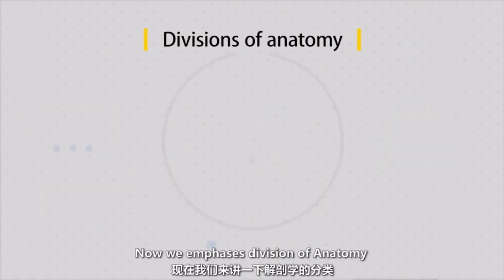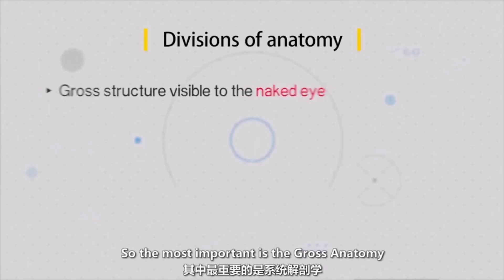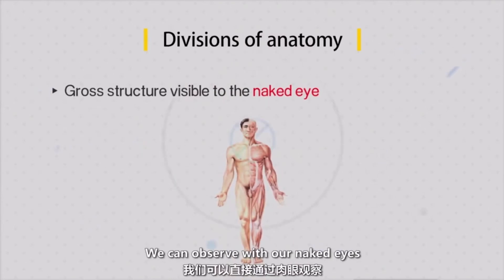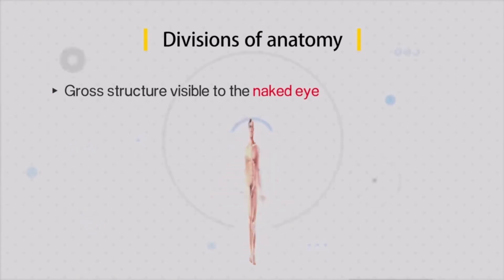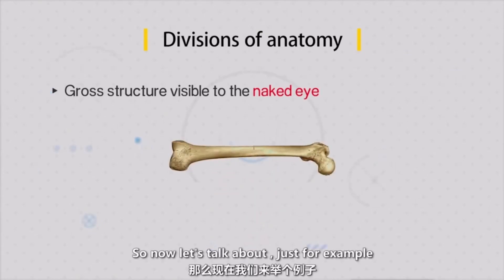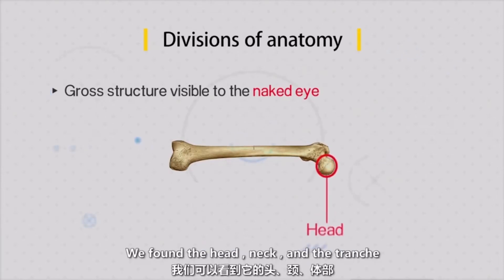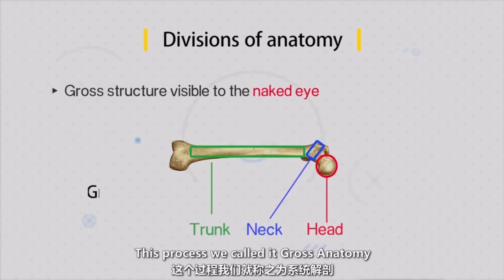Now we emphasize the divisions of anatomy. Anatomy is divided into many courses. The most important is gross anatomy. 'Gross' means big — we can observe it with our naked eye. For example, we observe this femoral bone and find the head, the neck, and the trunk. We use the naked eye to look at the specimen. So we call it gross anatomy.